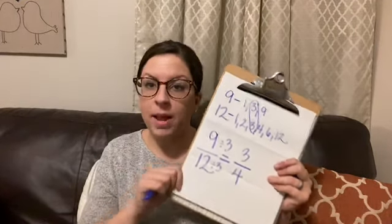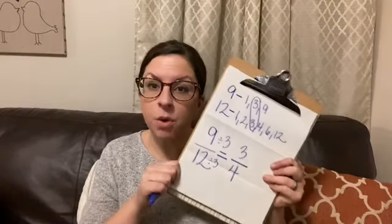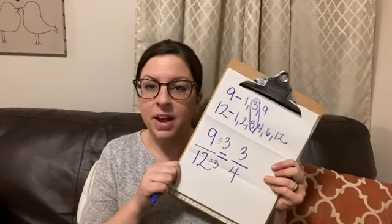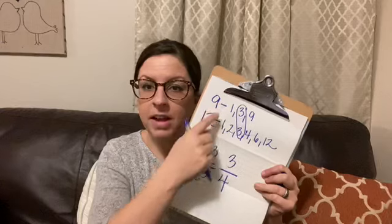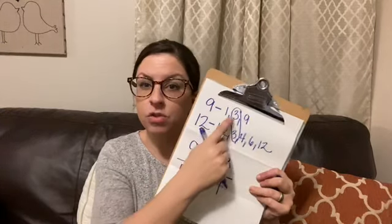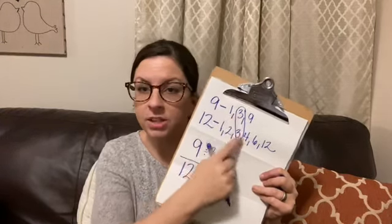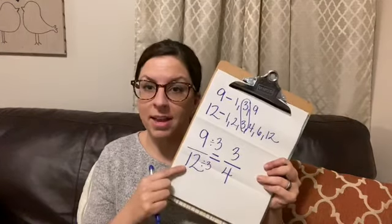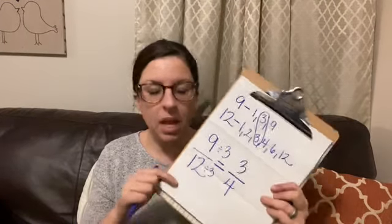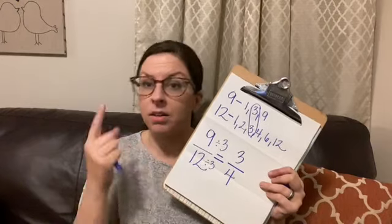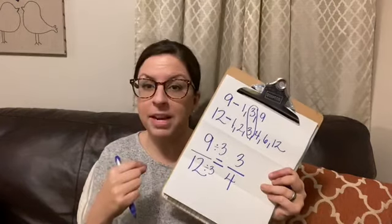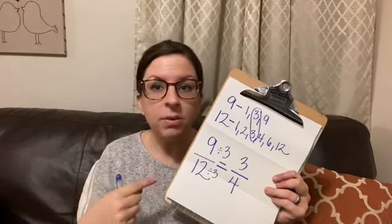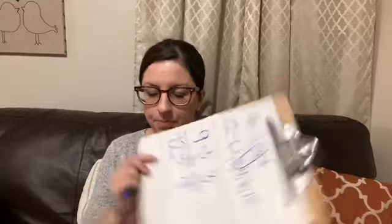So the way that you find the simplest form of a fraction is finding the greatest common factor of the numerator and the denominator, and dividing the numerator and denominator by that number. I know that was a long explanation, but the more we do it, the easier it'll come, and you'll start knowing the greatest common factors pretty fast.